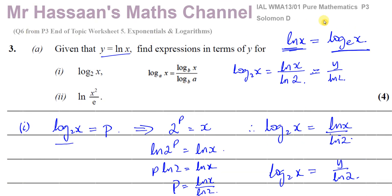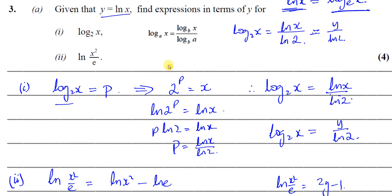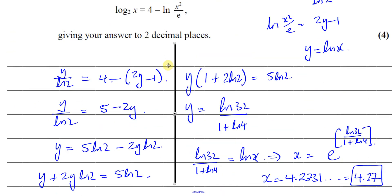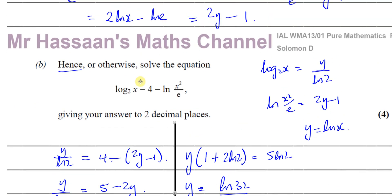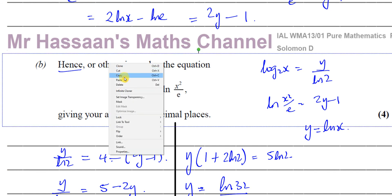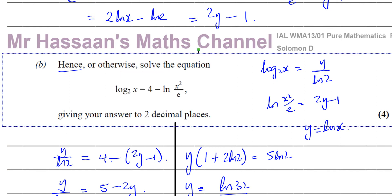Okay, this is question number 6 from the end-of-topic worksheet. Now there's also another way we could have done this — the 'otherwise' method — which would basically be to make all terms the same base. So you'd first split them up.